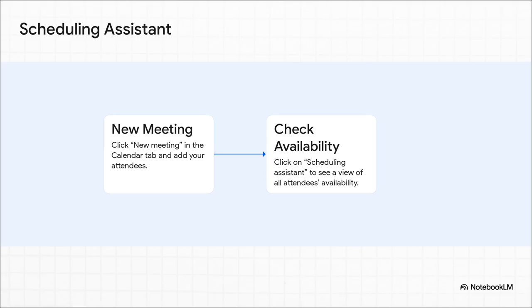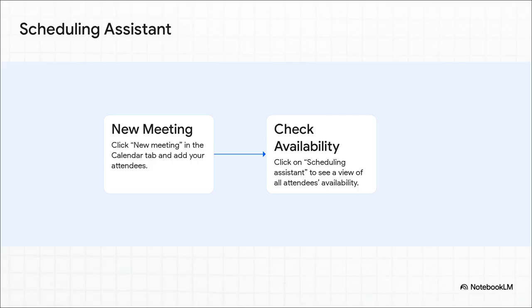It's a pretty solid tool for just quickly spotting an open slot. But — and this is a big but — there's a catch. The scheduling assistant only shows you a free or busy block. You can't see what the meetings are, how important they might be, or any other context.